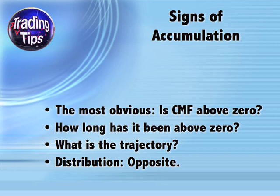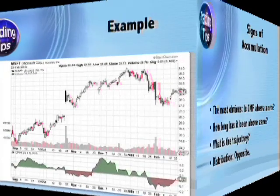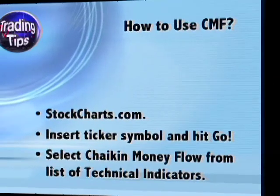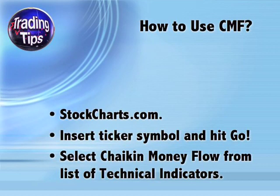For signs of distribution, use the same principles in reverse. A stock with a negative CMF value is in distribution, particularly if it's been under zero for a long time and/or if the trajectory is headed down. Here's an example of a stock chart with a CMF underlay. Look at how the CMF pretty accurately tracks and predicts the price movement of the stock, and take note of the few instances when CMF gave false signals.